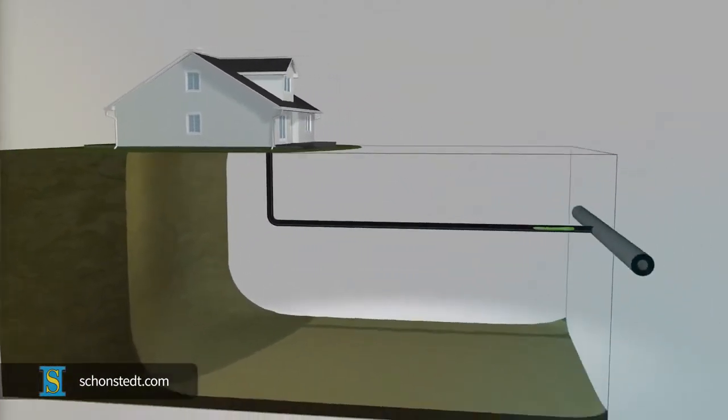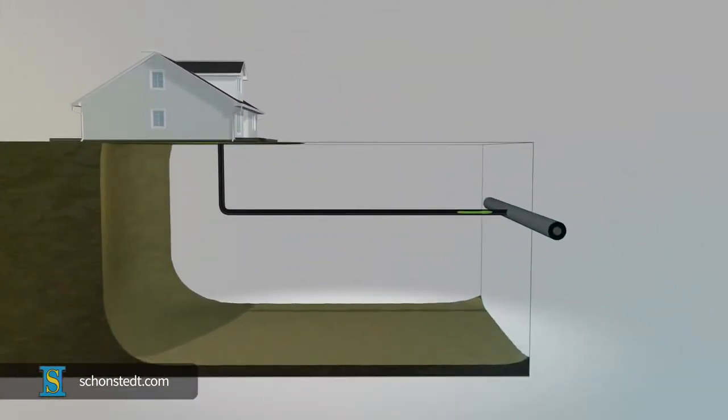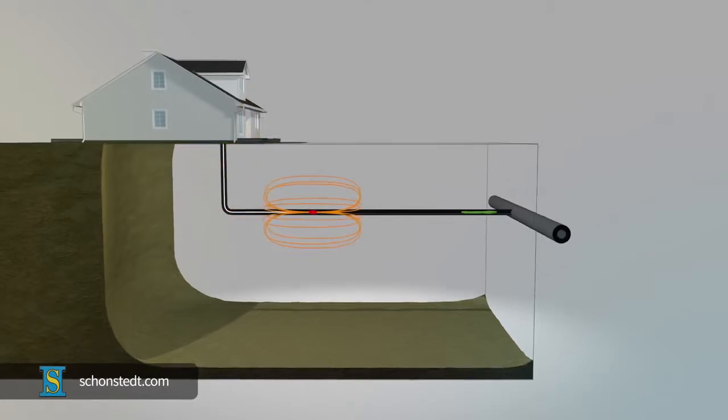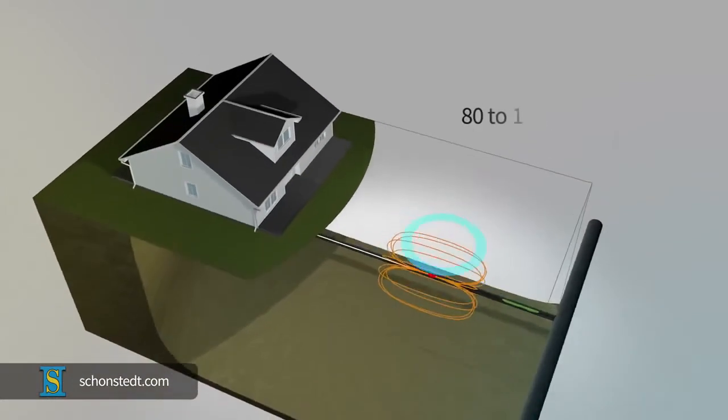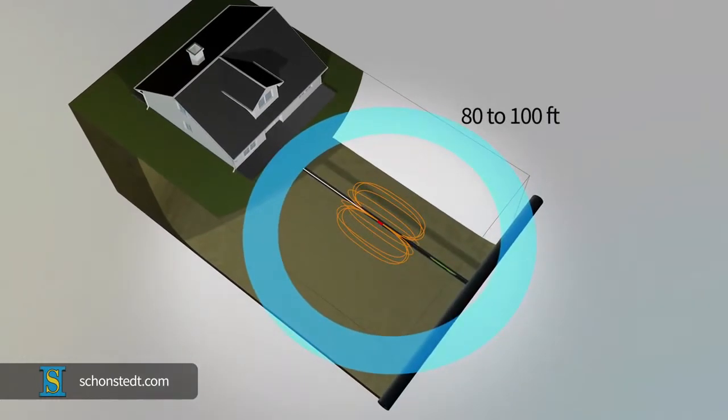Because sondes are small and battery-operated, the signal they emit is limited. In addition, the sonde has to be pushed mechanically into the pipe by an operator. Because of this, sonde locating is usually done within relatively short distances, between 80 to 100 feet or approximately 25 to 30 meters.